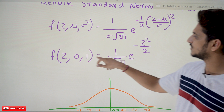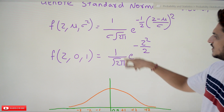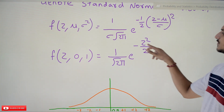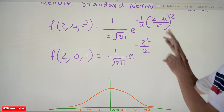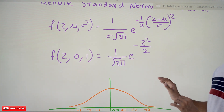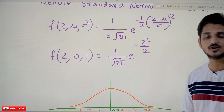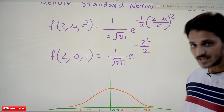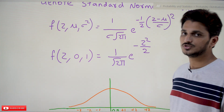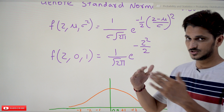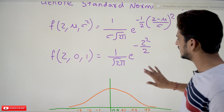The standard normal distribution equation simplifies to: f(z; 0, 1) = (1/√(2π)) · e^(−z²/2). This is the equation for standard normal distribution. Let's have a graphical intuition about how the standard normal distribution looks.